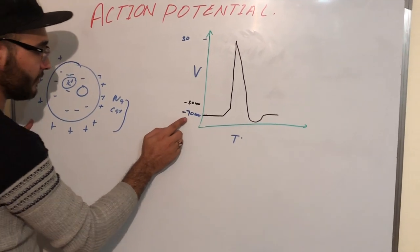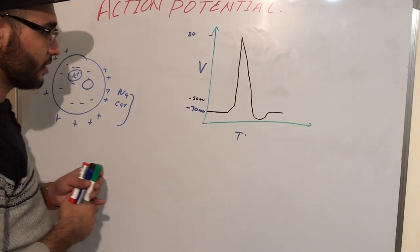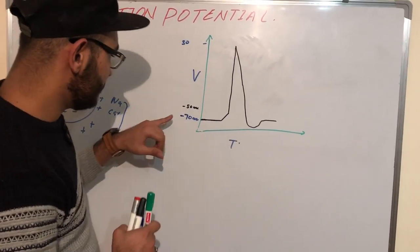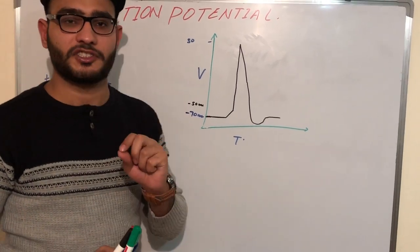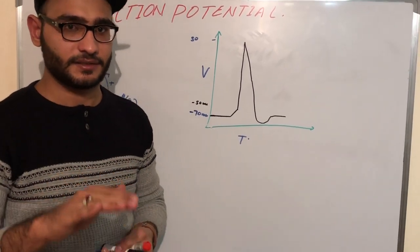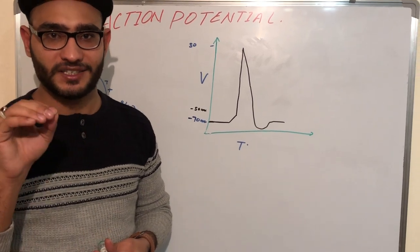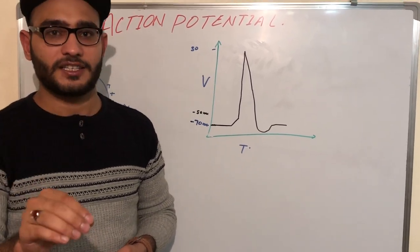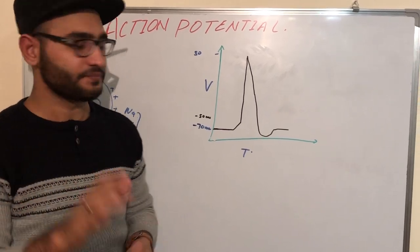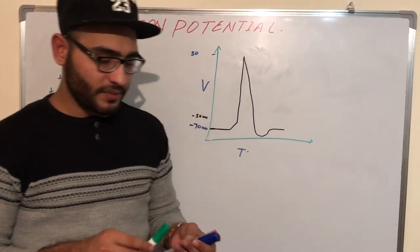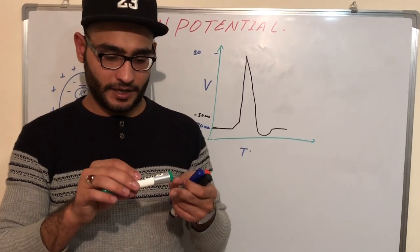The resting membrane potential is minus 70 millivolts. At this condition the cell is at rest. The definition of the resting membrane potential is simply: the potential at which the cell is at rest is known as the resting membrane potential.